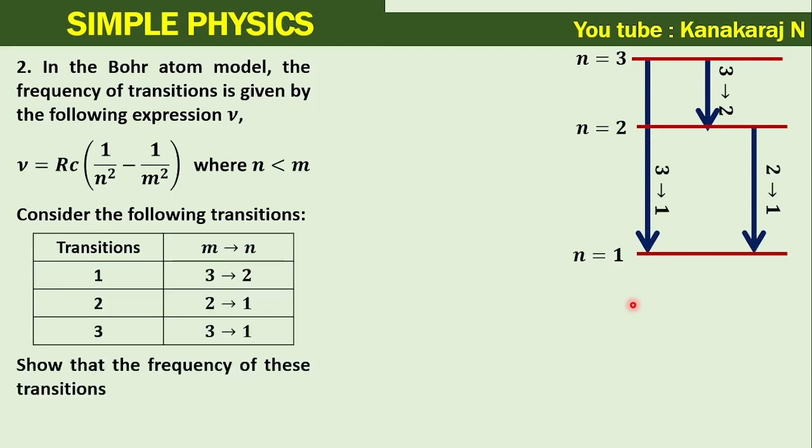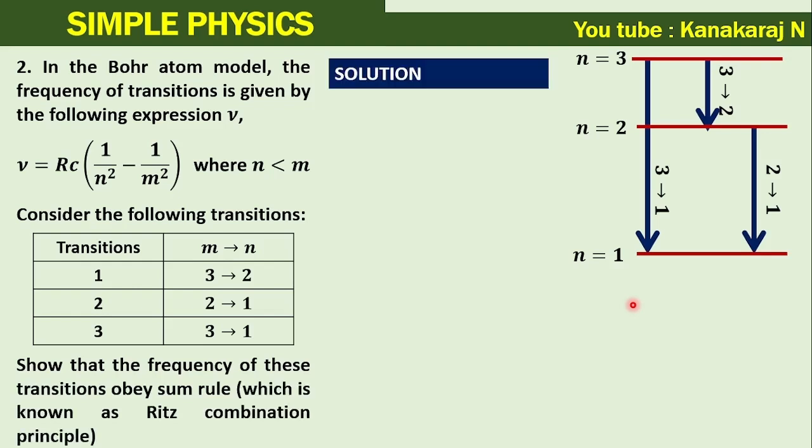So that the frequency of these transitions obey some rule, which is known as Ritz combination principle. Solution: The frequency for transitions 1 and 2 are given here.